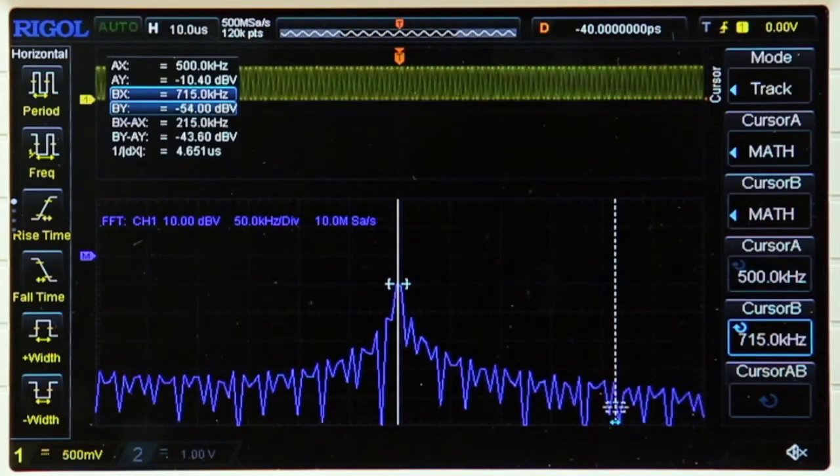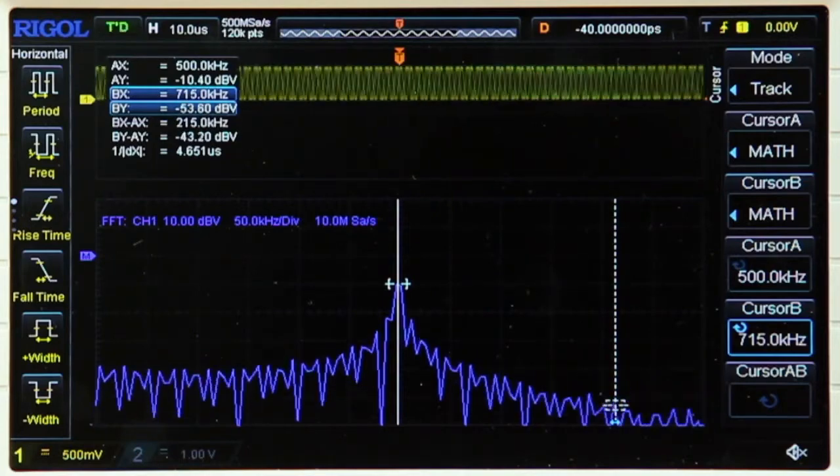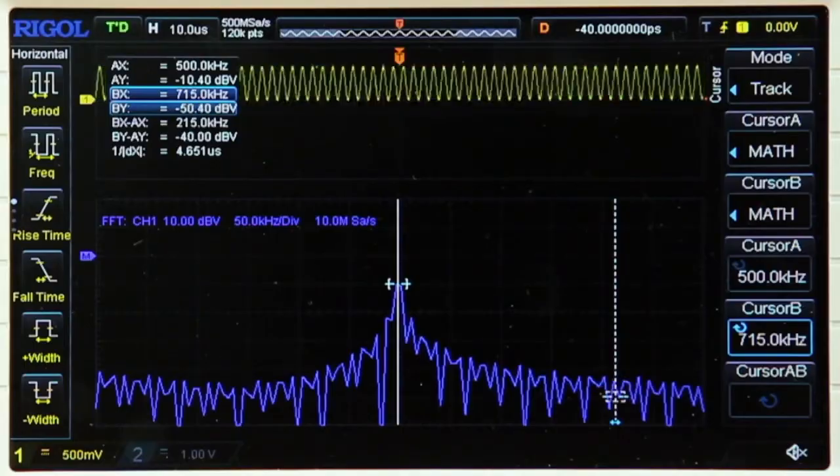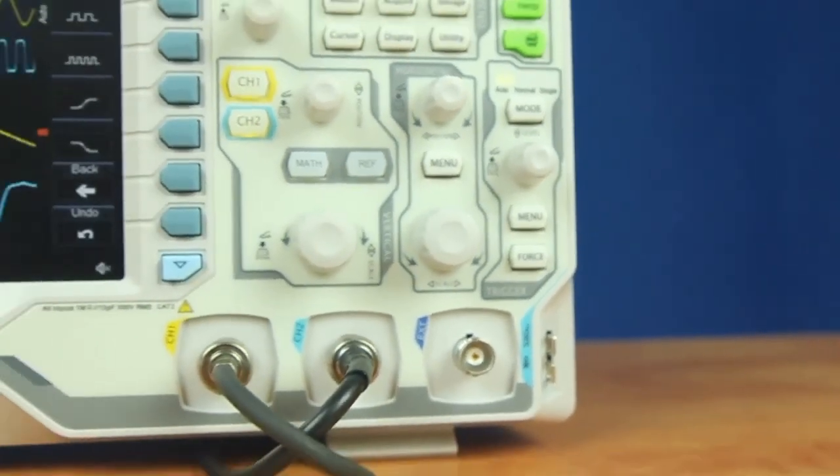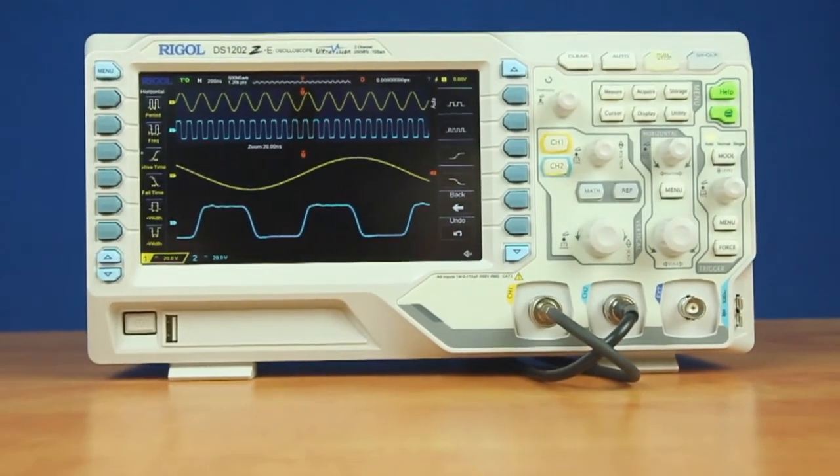The instrument also features a 16,000 point FFT function which can be used with the instrument's cursor function to allow you to easily analyze signals in the frequency domain. With these features and the increased bandwidth, the DS1202Z-E is a powerful new addition to the DS1000Z series.